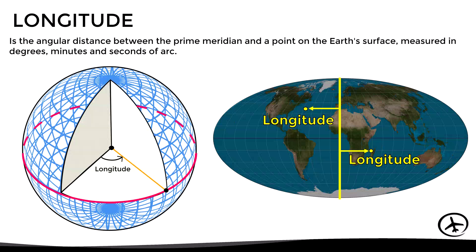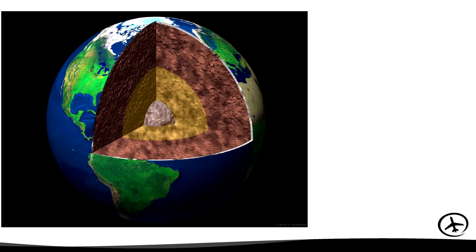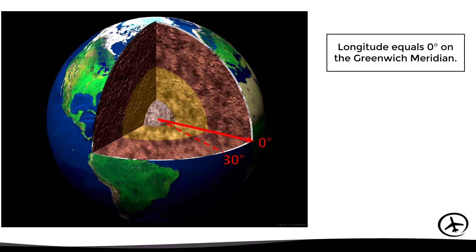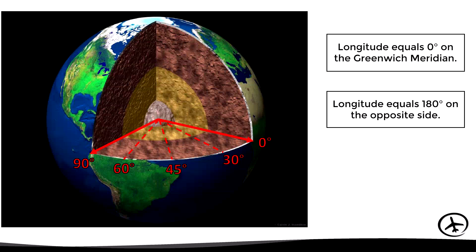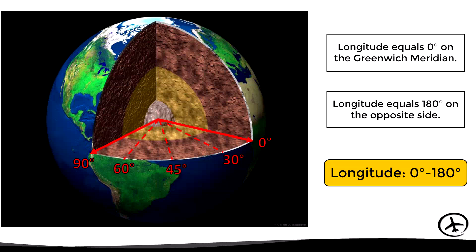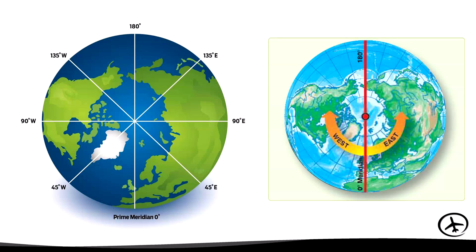Longitude is defined as the angular distance between the prime meridian and a point on the earth's surface, measured in degrees, minutes, and seconds of arc — in simpler words, how far east or west a point is. Longitude is an angle measured from the center of the earth, where the prime meridian represents zero degrees. Longitude equals zero degrees at the prime meridian and increases gradually to 180 degrees on the opposite side of the planet, so longitude goes from zero to 180 degrees east or west.